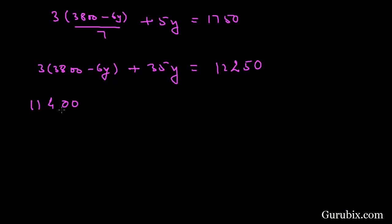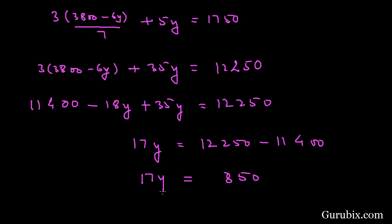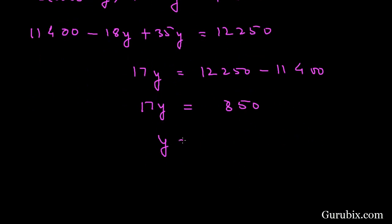After multiplying, we get 11400 minus 18Y plus 35Y equals 12250. This simplifies to 17Y equals 12250 minus 11400, so 17Y equals 850, which means Y equals 50.